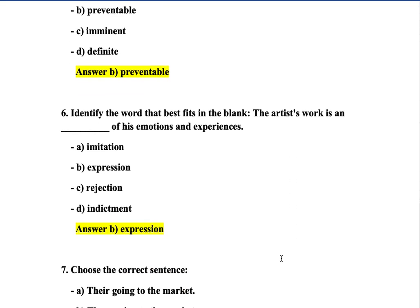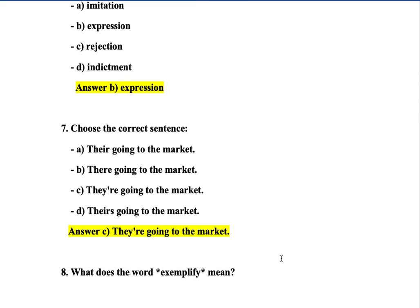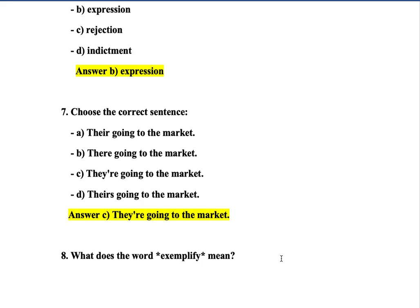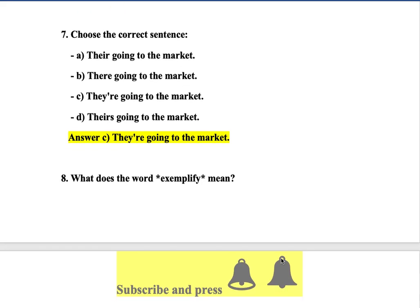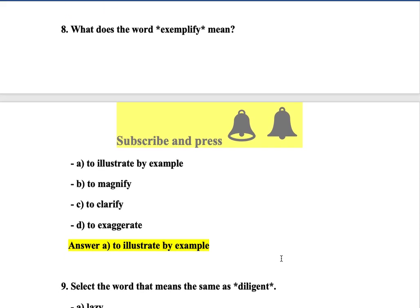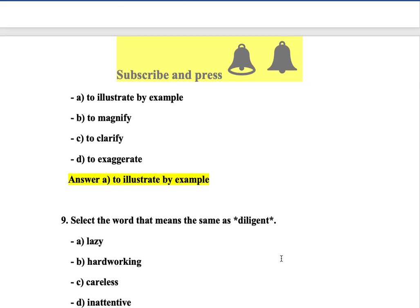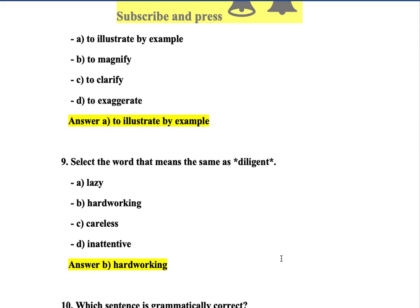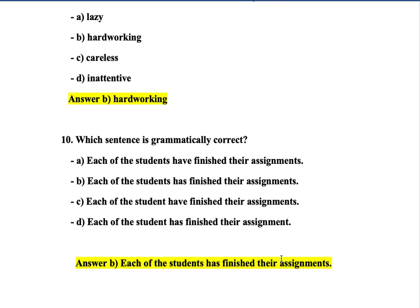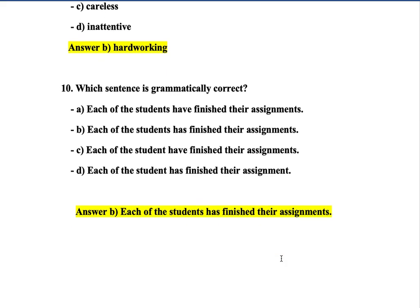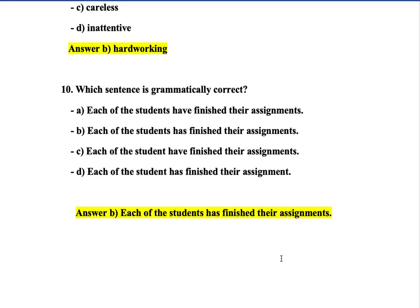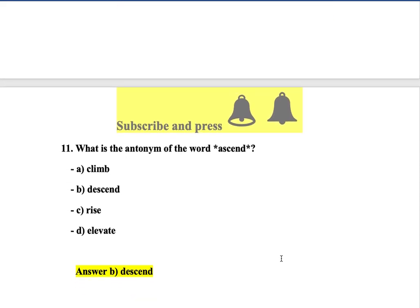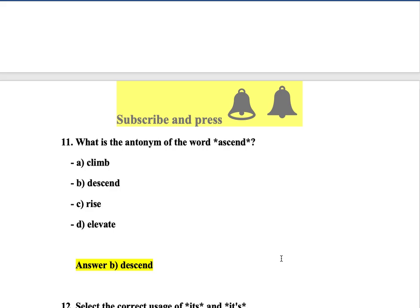Question 6: The artist's work is an expression of his emotion — option B. Question 7: Choose the correct sentence — sentence C is correct: 'They are going to the market.' Question 8: What does the word 'exemplify' mean? It means to illustrate by example. Question 9: Select the word that means the same as 'diligent' — hard-working. Question 10: Which sentence is grammatically correct? Option B is correct: 'Each of the students has finished their assignment.'